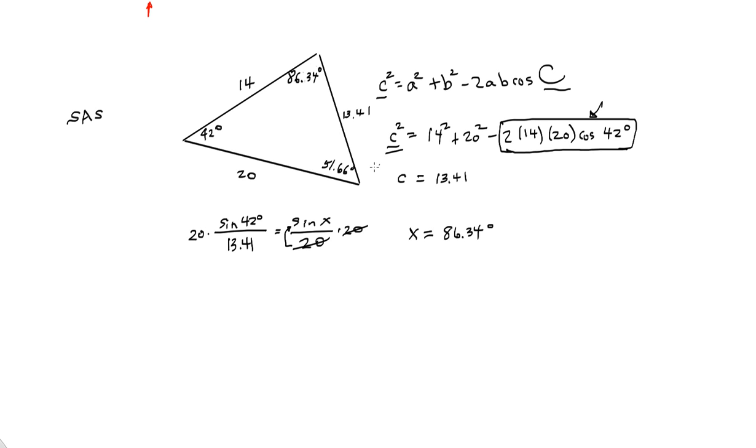So that's how we find or we solve an oblique triangle using the law of cosines with an SAS situation, a situation where you know two sides and the angle in between them. And just as a quick review, what we do is we use this formula here.